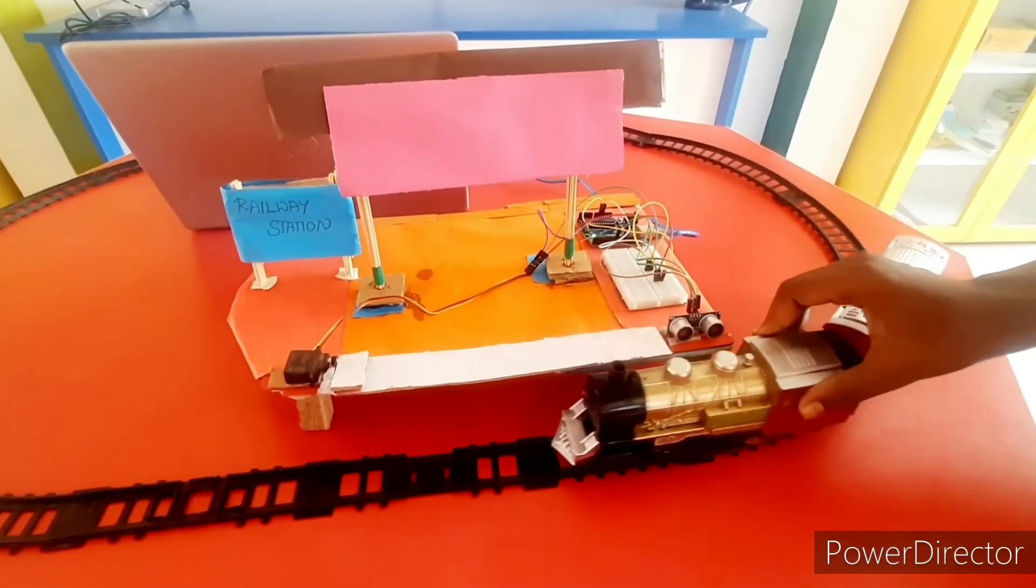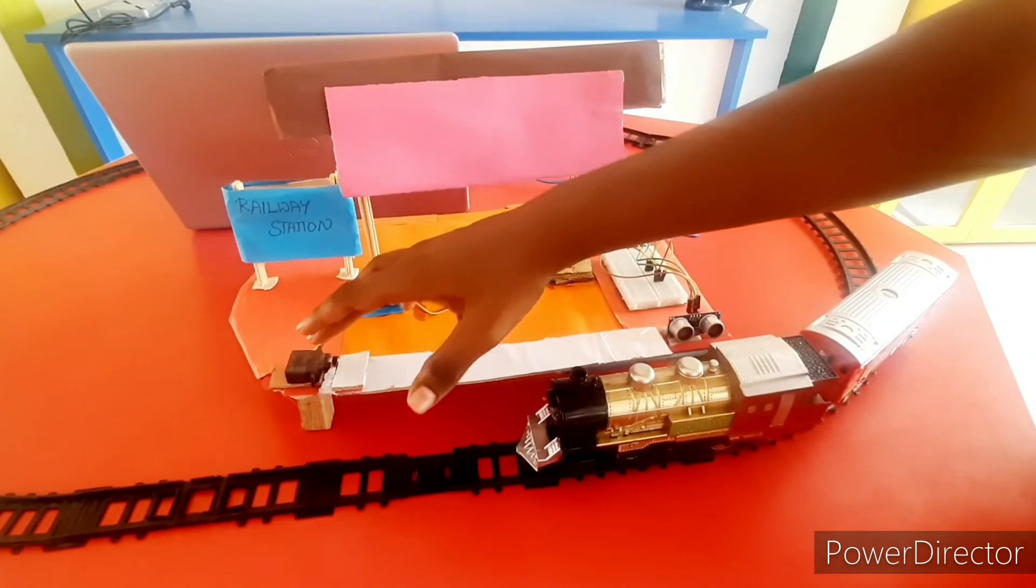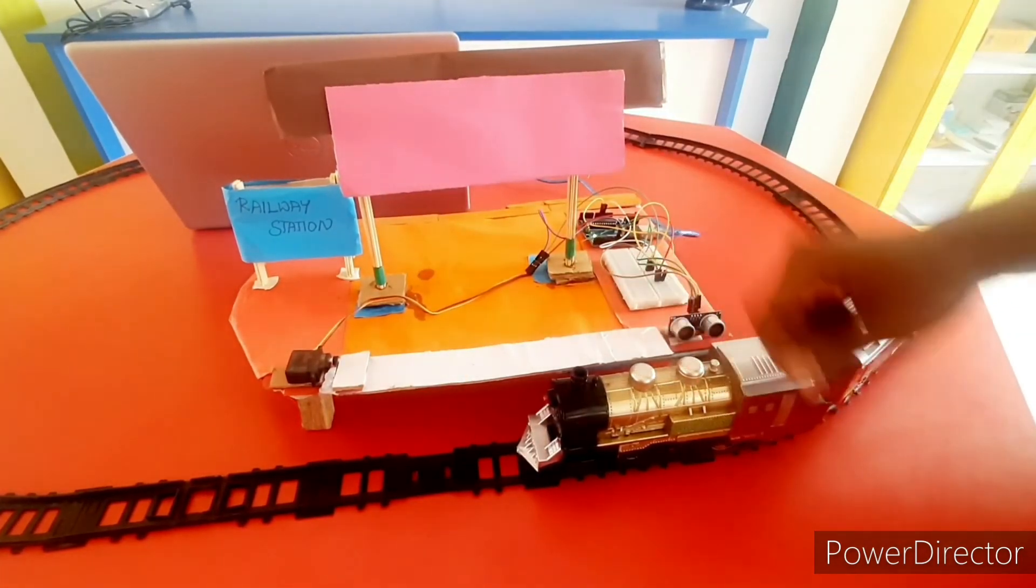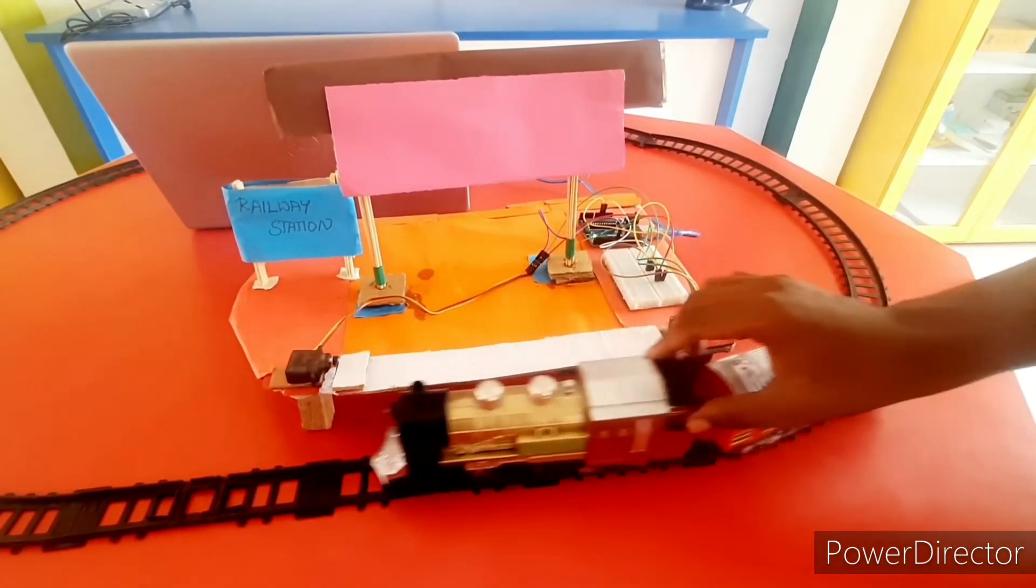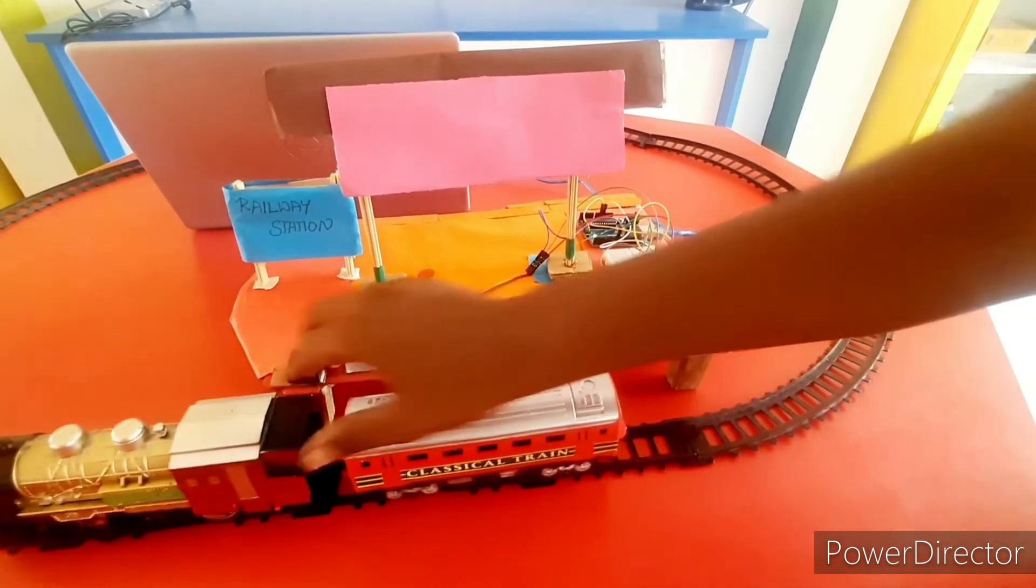Once the sensor detects the train, it gives signal to servo motor and therefore it opens the gate. When the train leaves the station, it automatically closes the gate.